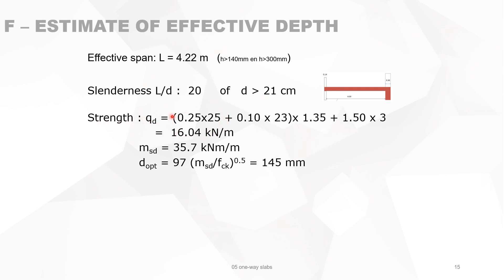Then we calculate the strength. The load is the self-weight of the slab, taken as 25 centimeters (rounded), plus 0.10 m of concrete floor finishing. The surfacing is multiplied by 1.35 as a permanent load, plus the imposed load for a classroom of 3 kilonewton per square meter times 1.5. This gives 16 kilonewton per square meter. The bending moment is QL² over 8, equal to 35.7 kNm/m, and the optimum depth required for strength is 145 millimeters.